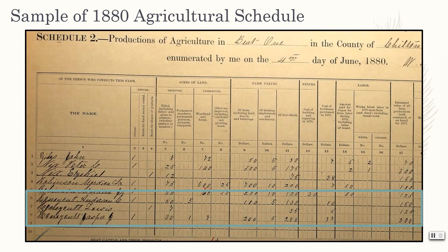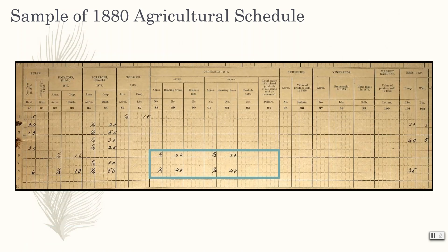Here we have another Chilton County agricultural schedule, this one from 1880. The names in the box have special significance to me. The first name, Anderson Honeycutt, is my fifth great grandfather. The two men below him, Lewis and Jasper, are his sons, and Jasper is my fourth great grandfather. Now, if you know anything about Chilton County, you'll know that some of the finest peaches in the world are grown there. I wanted to know if my Honeycutt ancestors grew peaches, which is an orchard crop included in the 1880 schedule. Moving further down the page under the orchard section, we see that both Anderson and Jasper grew peaches on their farms. Jasper had twice the number of trees planted that his father had, and they also grew apples.